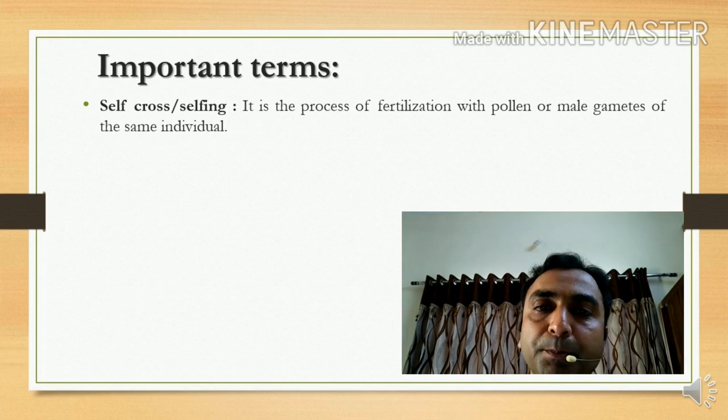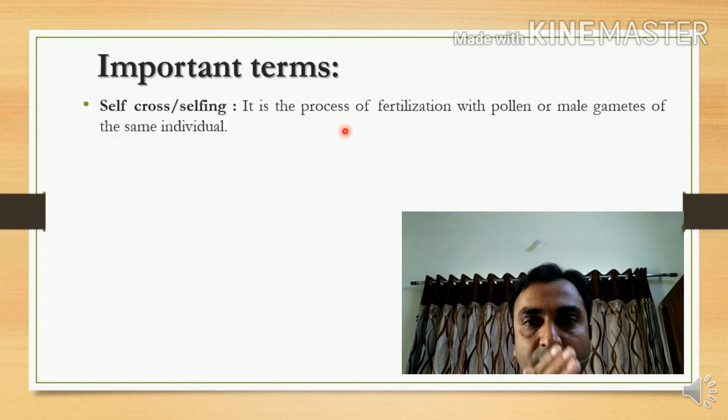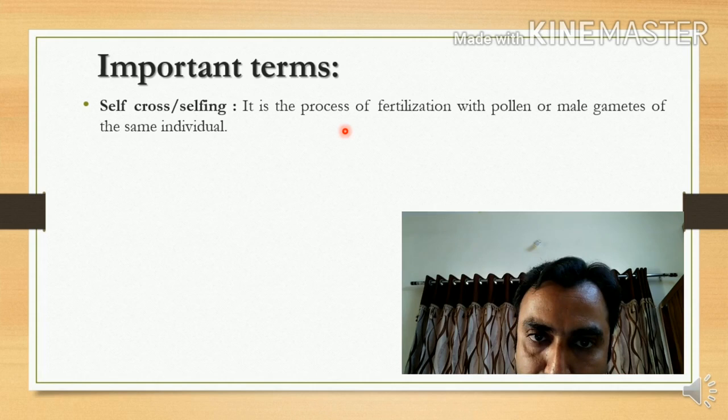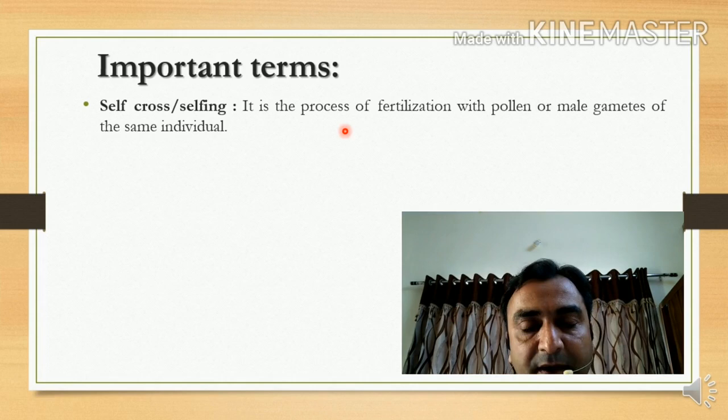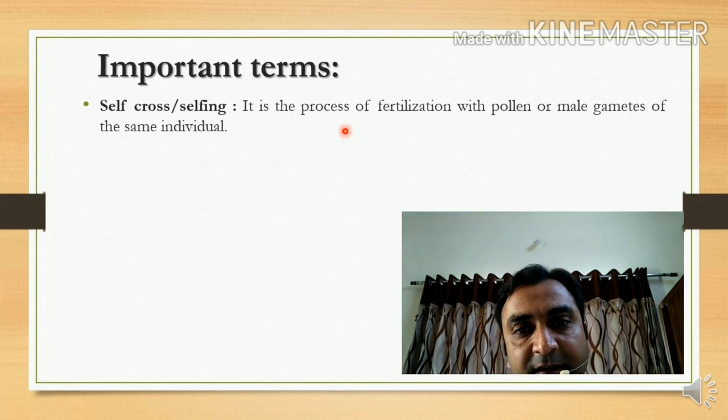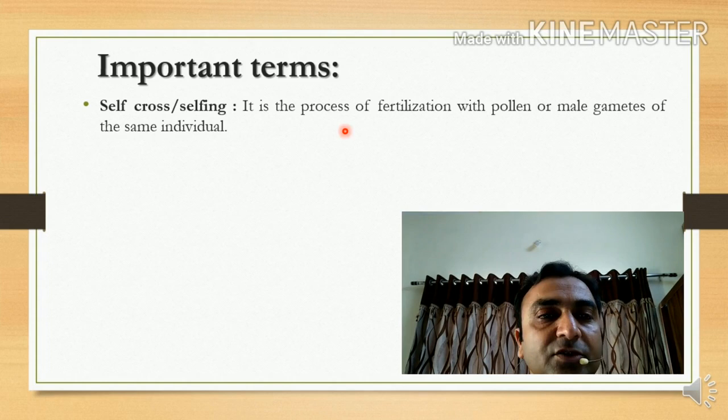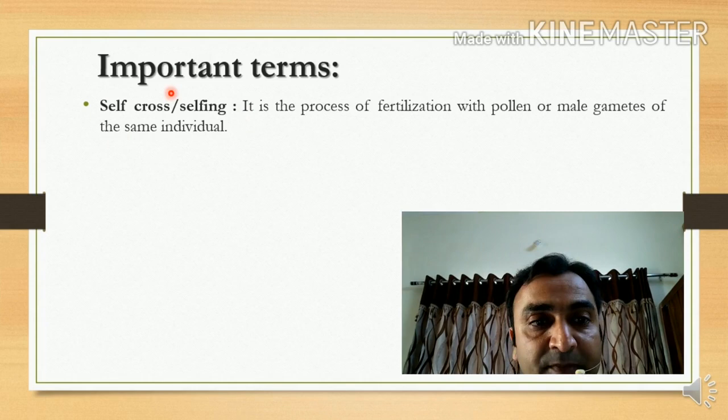One new term: self cross or selfing. It is the process of fertilization using the pollen or male gamete of the same individual. One plant has one male flower and one female flower. The pollen collected from the same plant is forwarded into the stigma of the same plant — that process is called self cross or selfing.